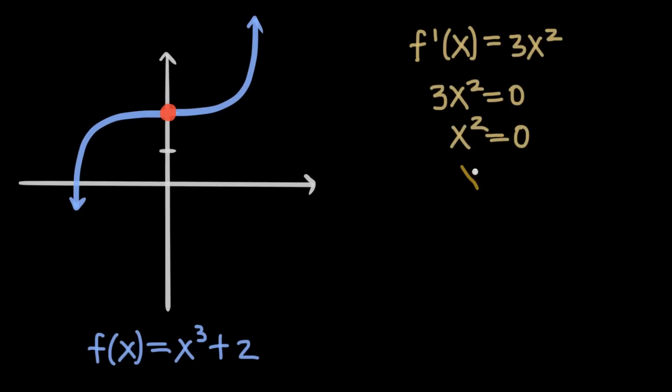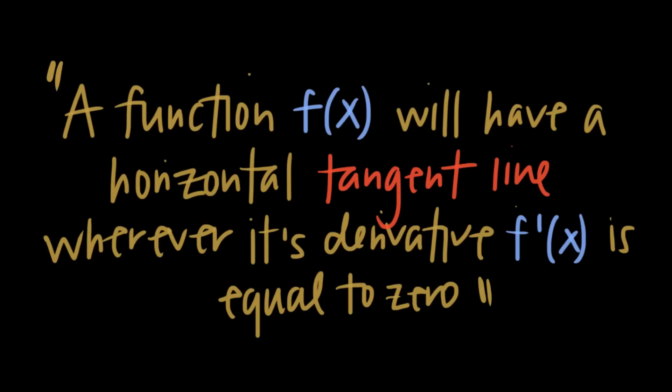Then take the square root to get x equals 0. The derivative at a point will be equal to the slope of the tangent line at that point, and a tangent line with slope 0 will be totally horizontal and therefore parallel to the x-axis. So a function will have a horizontal tangent line anywhere where its derivative is equal to 0.